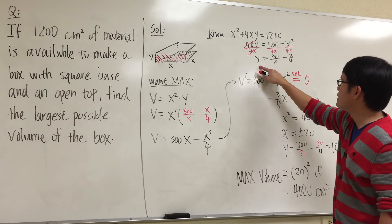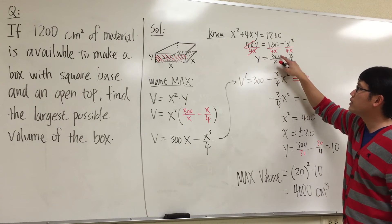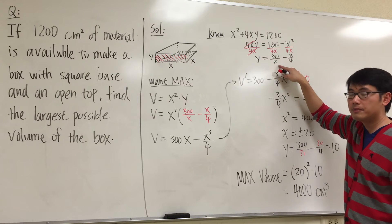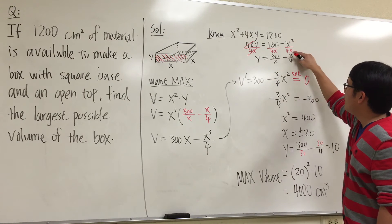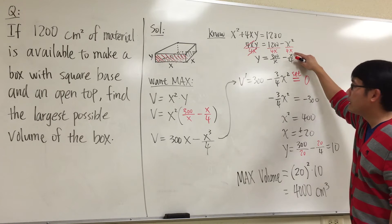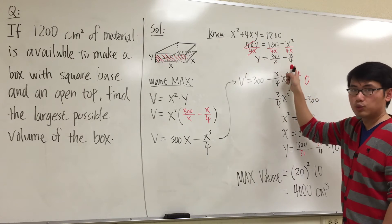And as we can see, 1200 divided by 4 is equal to 300, and then we still have the x on the bottom. x² over x, we have x on the top, and we still have the 4 on the bottom. This right here is y.